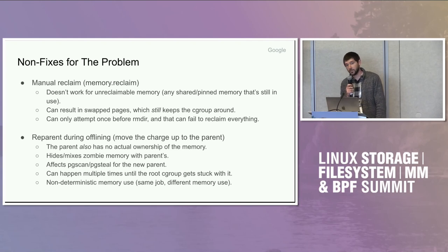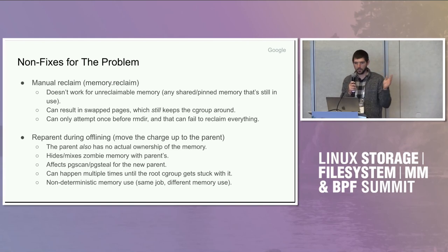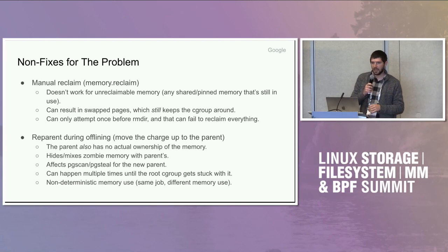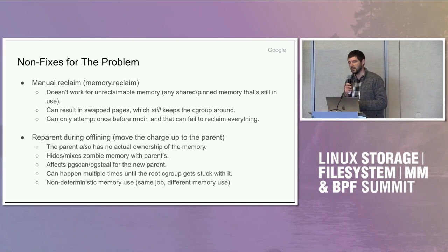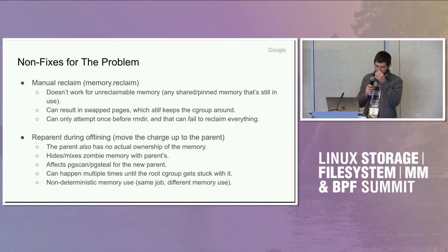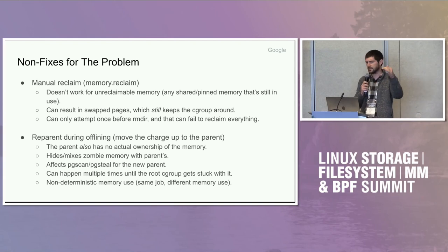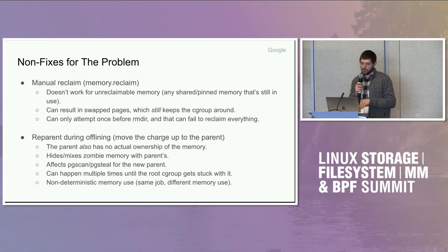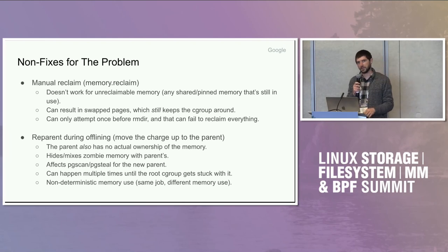Another thing we can try is to reparent the charge. The cgroup hierarchy exists, so why don't we just move the charge up to the parent and completely get rid of the originally owning cgroup? Well, that's also kind of weird — the parent doesn't have any more claim to the memory than the child does. In terms of correctly accounting who gets charged for what memory, that's still not ideal. And it affects the LRU of the parent too — you're mixing zombie pages with non-zombie pages, and then you have to scan more pages in the parent. Reclaim regression is there. That reparenting can happen multiple times, all the way up to the root cgroup, and it just gets worse and worse each time.